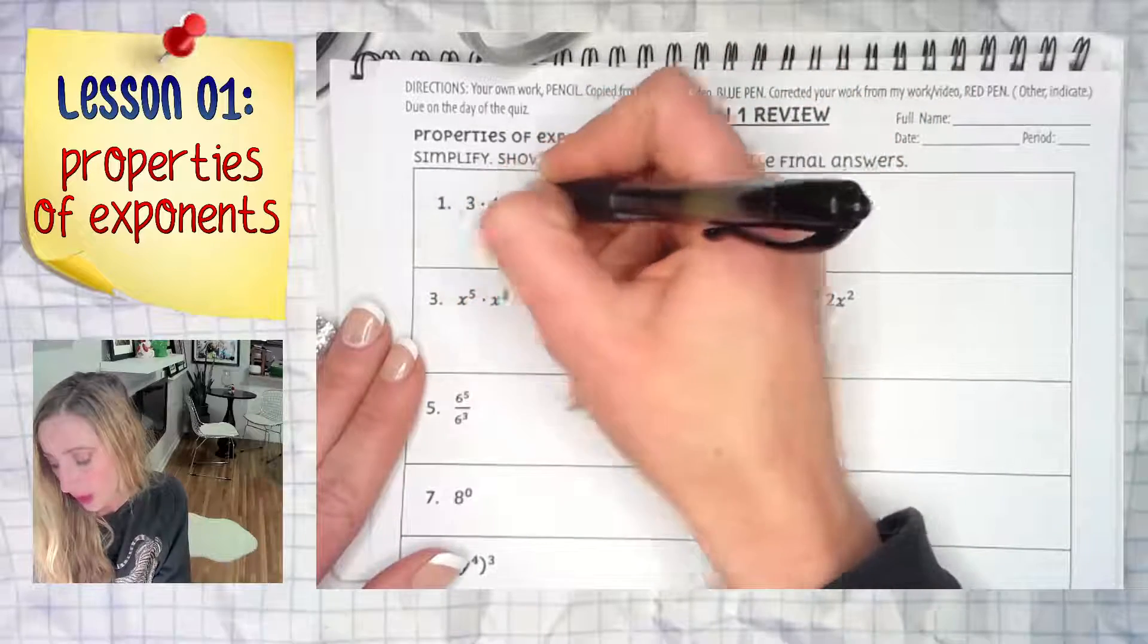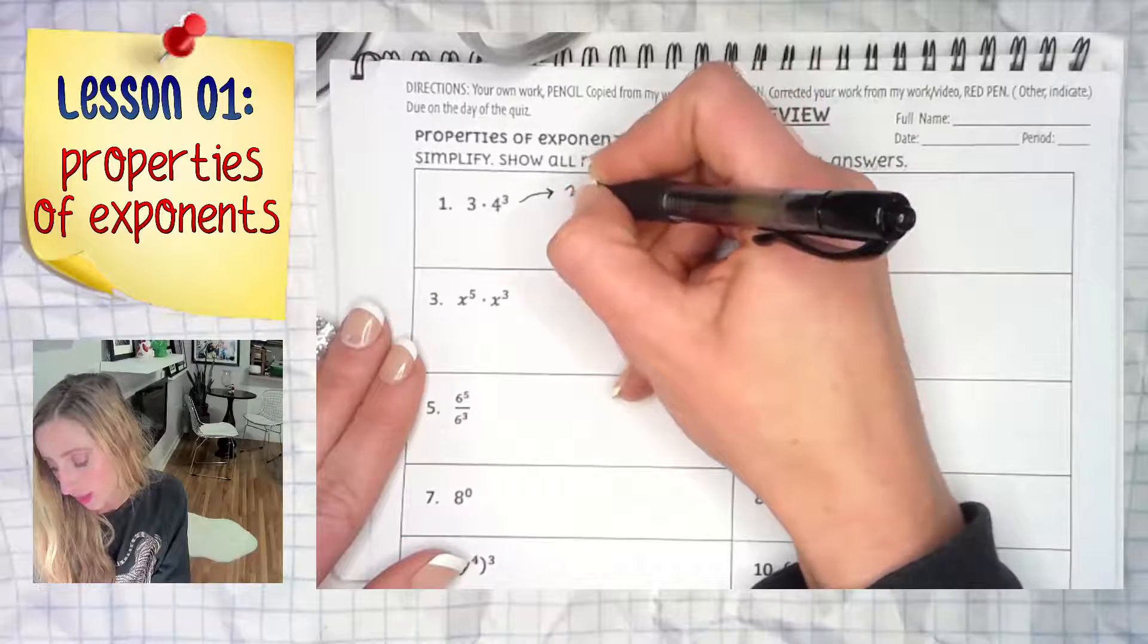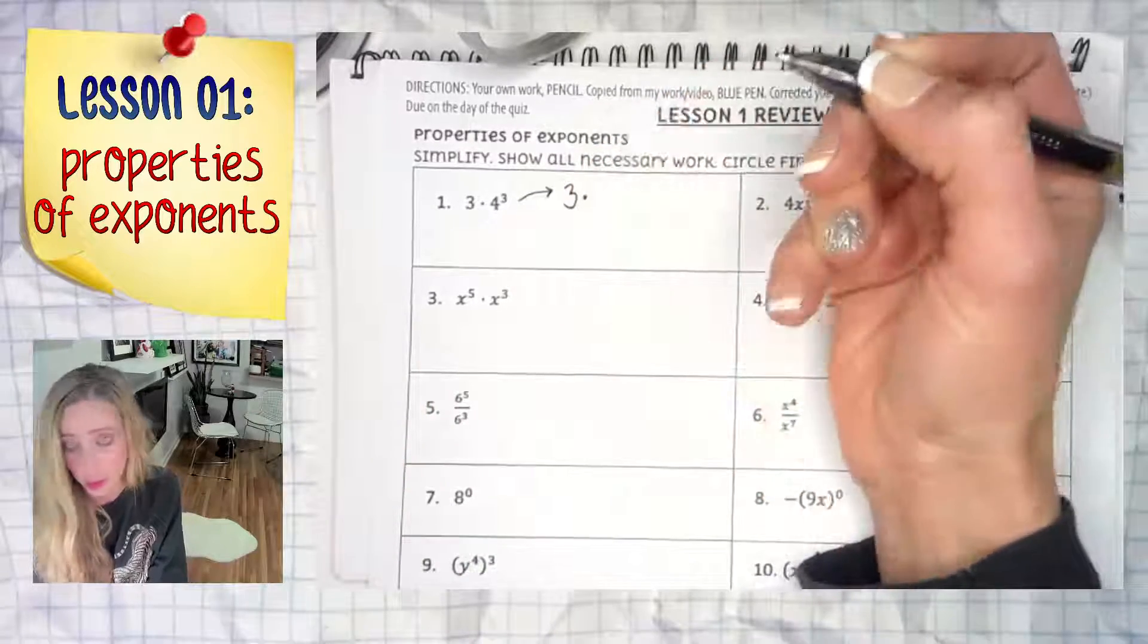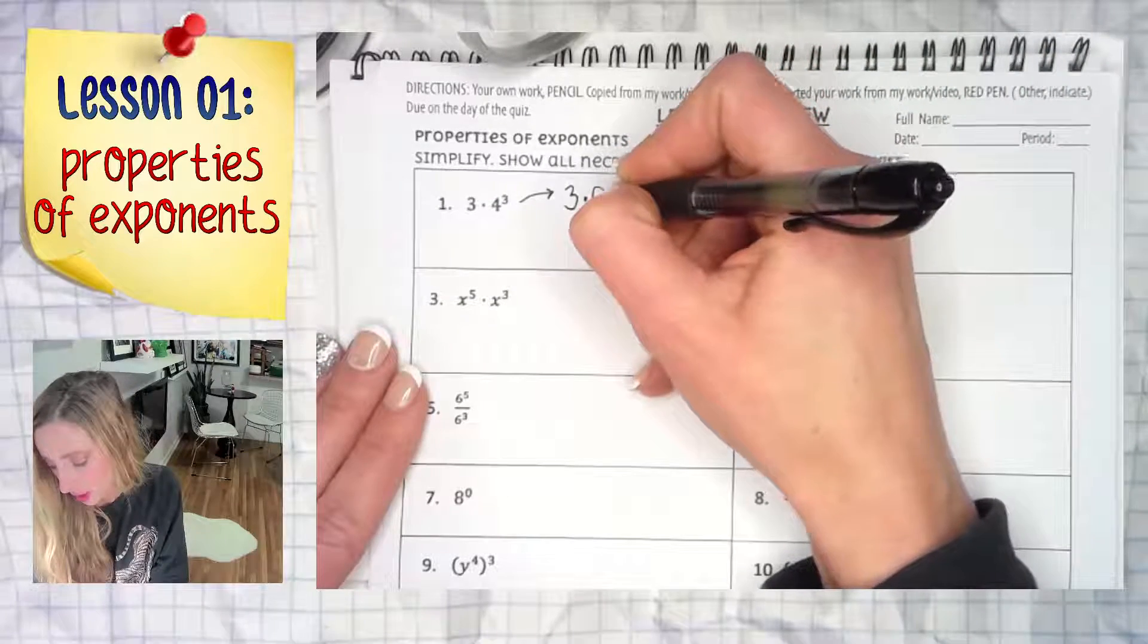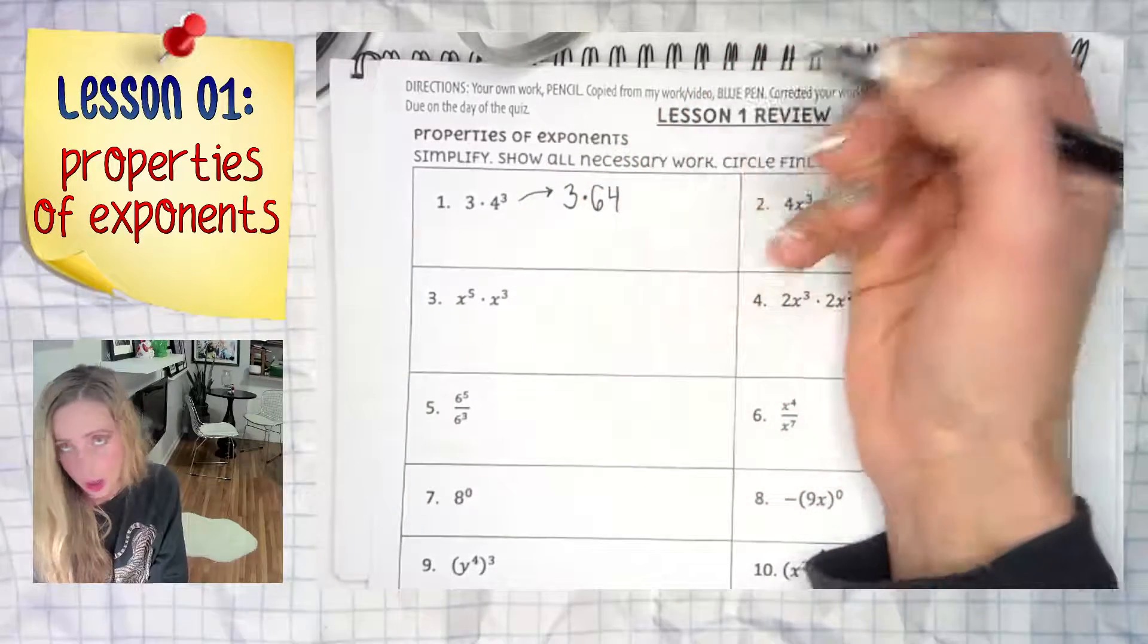In reality, 4³ is one that you should, at the level of Algebra 2, have memorized by this point in the school year. That answer is 64.